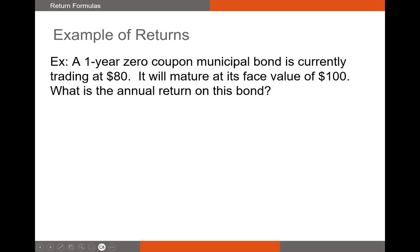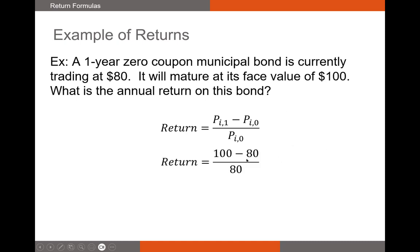Quick example: a one-year zero coupon municipal bond is currently trading at $80 and will mature at its face value of $100. What is the annual return? We use the return formula with no coupon payments. So it's $100 minus $80, divided by $80. Our return is 25%.